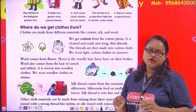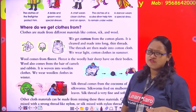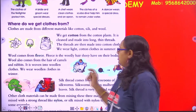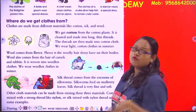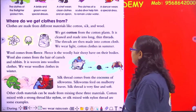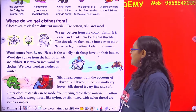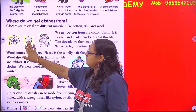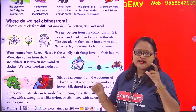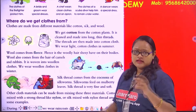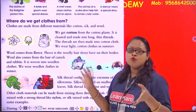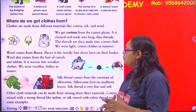Clothes are made from different materials like cotton, silk, and wool. We wear cotton in summer season, silk often on occasions, and wool in winters. Cotton comes from cotton plants — it is cleaned and made into long thin threads, which are then made into cotton cloth. We wear light cotton clothes in summer.